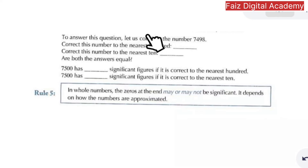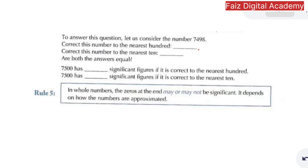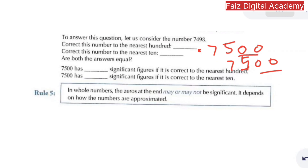For example, if we have the number 7498 and we round it off to the nearest hundred, it becomes 7500. If we round it to the nearest ten, it also becomes 7500 in this case. The last two digits depend on how the number was rounded — whether those zeros are considered significant or not depends on the context of the rounding.